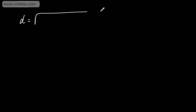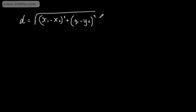In this video, we're going to look at the distance formula. We use the distance formula to find the distance between two given points or the length of a line segment. We can write the distance formula as d is equal to the square root of x1 minus x2 all squared, plus y1 minus y2 all squared.